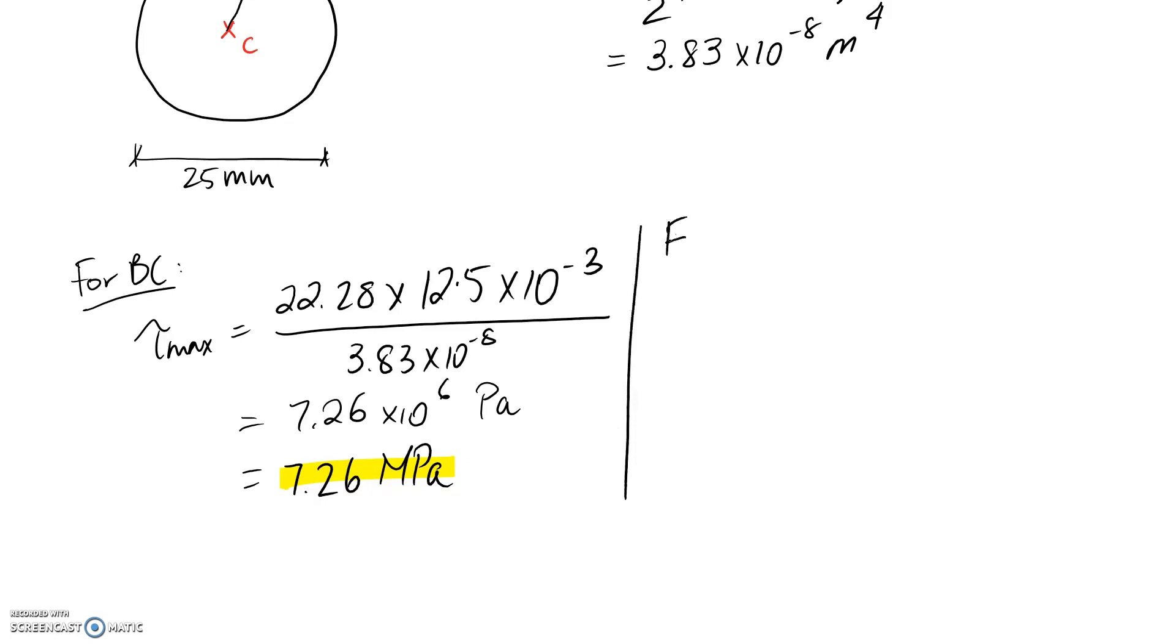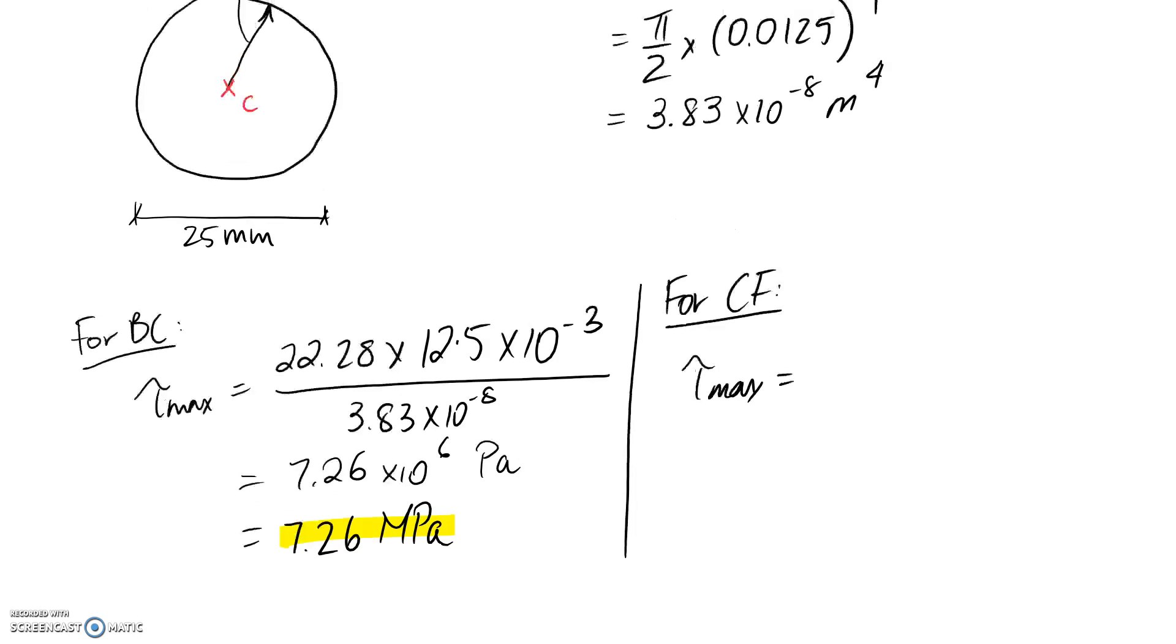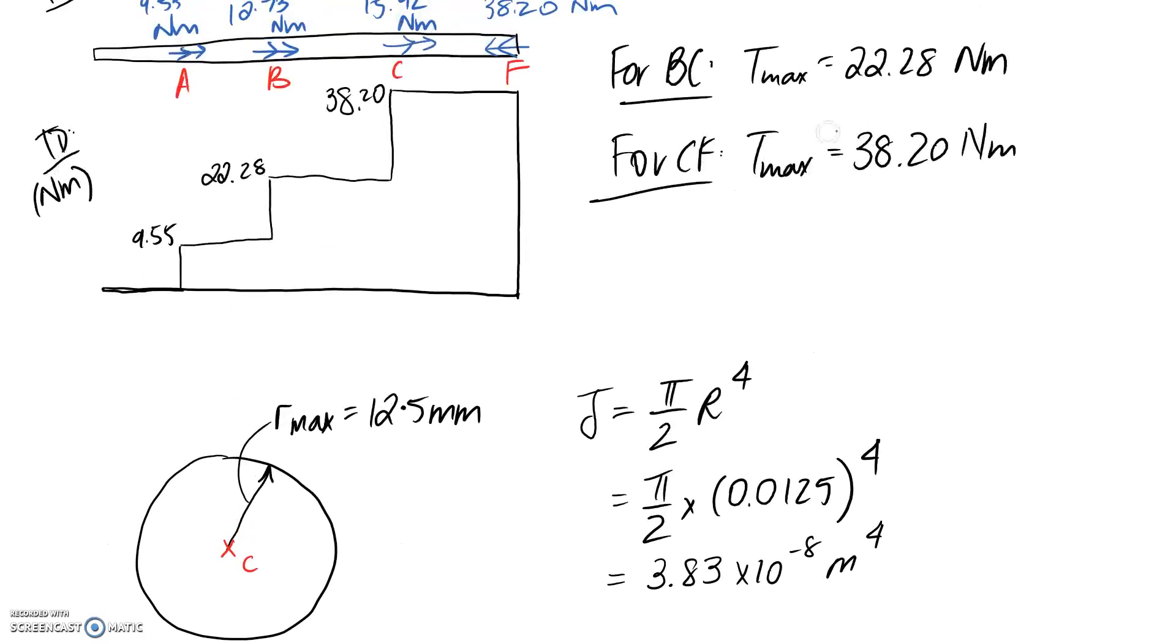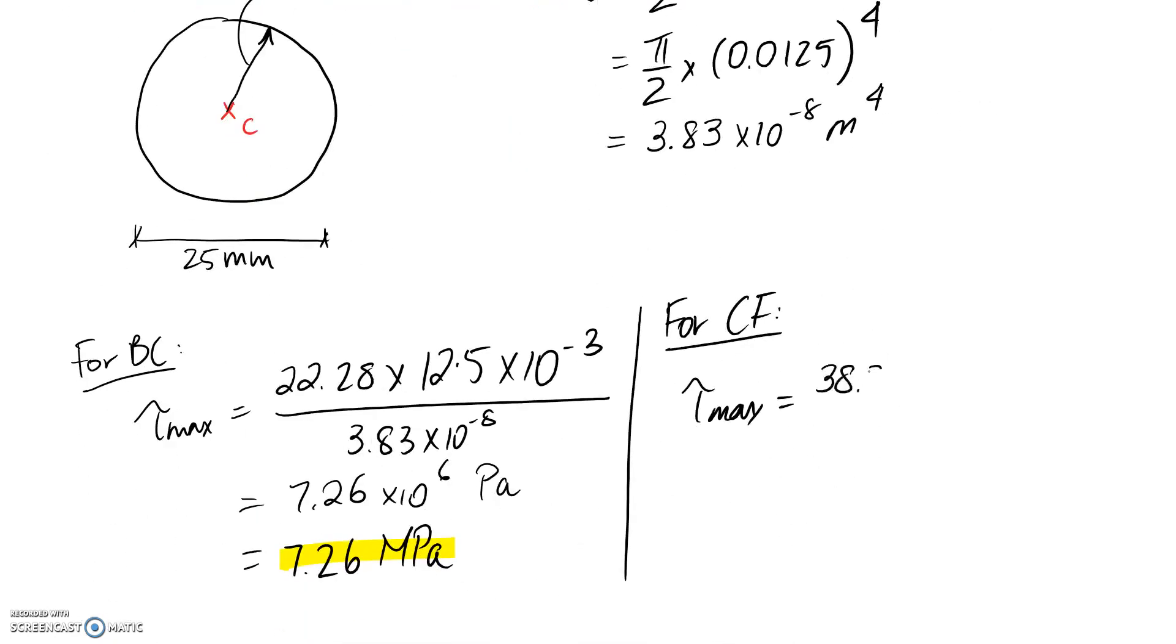We'll do the other section now, the CF section. Following the same procedure, we need to draw in the correct torque - the maximum torque for that section was 38.20 newton meters. The r and J were the same since we have the same size and shape shaft. When you pop this into a calculator, it comes out as 1.25 by 10 to the power of 7 pascals. Converting into megapascals by dividing by 10 to the power of 6, we end up with 12.5 megapascals for the answer. That's all there is in terms of this question.